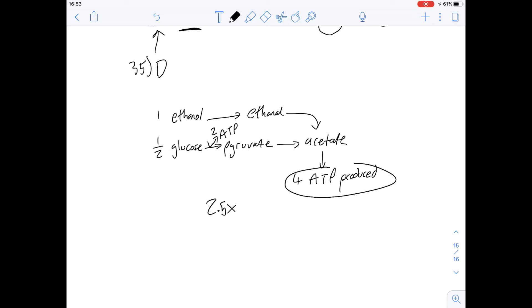And so out of the answers that we've got here it's less than one, more than one but less than two, more than two but less than four, or more than four. Well we know we need just over two molecules of ethanol to produce the same amount of ATP as produced by one molecule glucose. So the answer for number 36 is going to be more than two but less than four which is C.